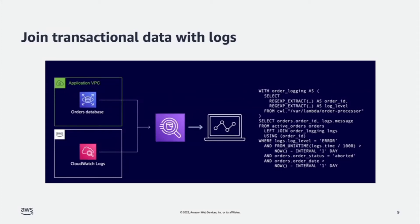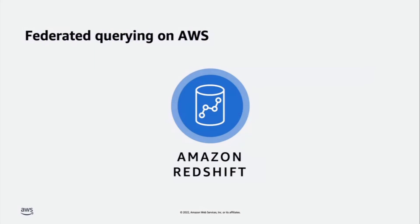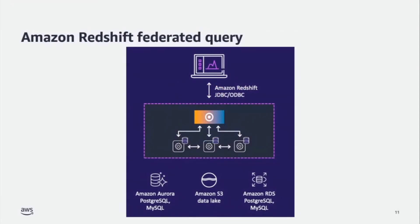Along with Athena, another service that supports federated querying is Amazon Redshift. Amazon Redshift is a cloud data warehouse that uses SQL to analyze structured and semi-structured data across data warehouses, operational databases, and data lakes. It uses AWS-designed hardware and machine learning to deliver the best price performance at scale. This enables a new data warehousing pattern called live data query, where you can seamlessly retrieve data from relational databases like PostgreSQL and MySQL, or build data into a late binding view that combines operational data, analytical data, Amazon Redshift local data, and historical data on Amazon S3 with Amazon Redshift Spectrum.